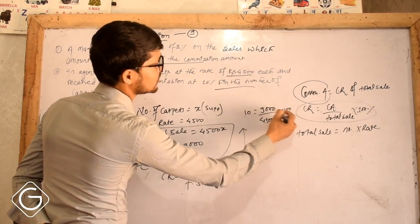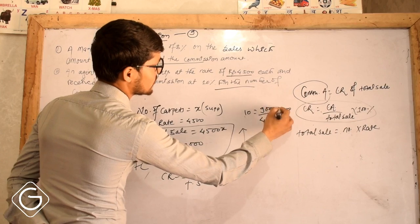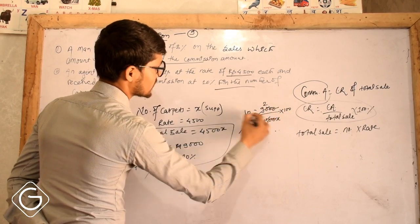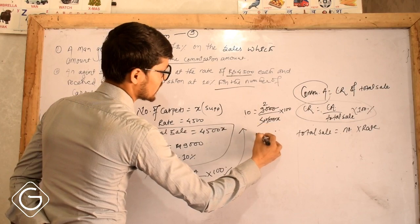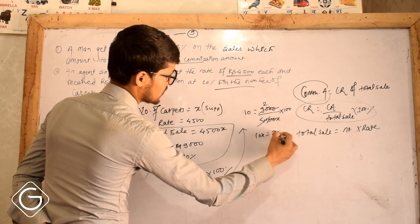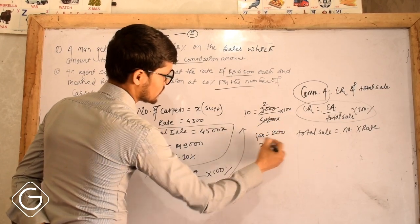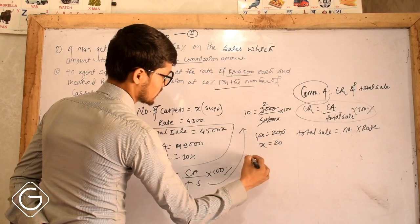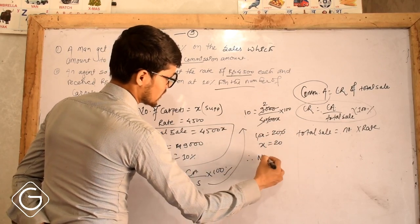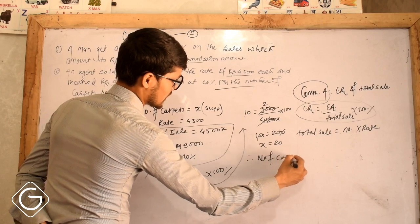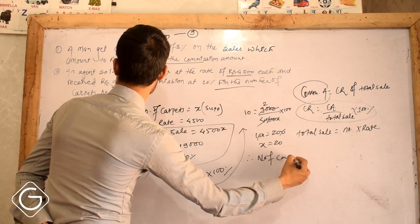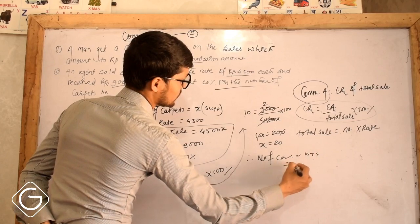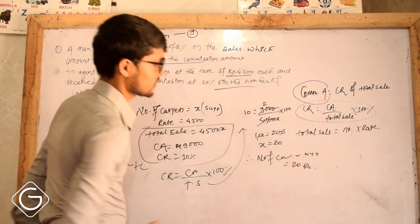After cancellation: 10X equals 200. Therefore X equals 20. So the number of carpets sold is equal to 20. Answer.